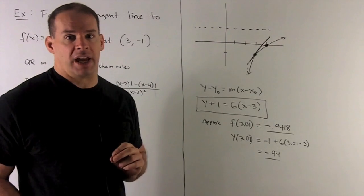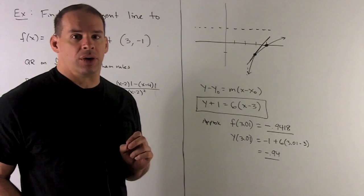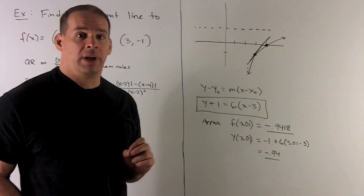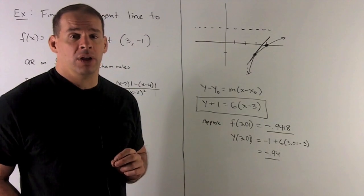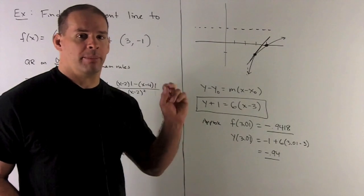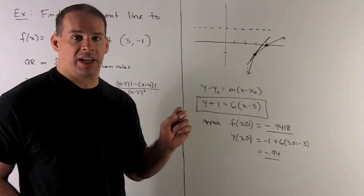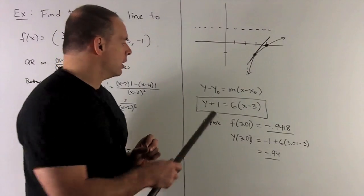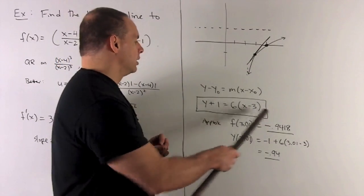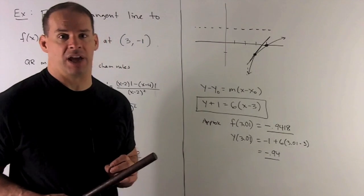How about the equation of the tangent line? Well, we're going to have y minus y zero equals slope times x minus x zero. So, we're going to have y plus 1, because we have minus and minus, equals 6 x minus 3. So, our tangent line is right there. That's our equation of the tangent line.